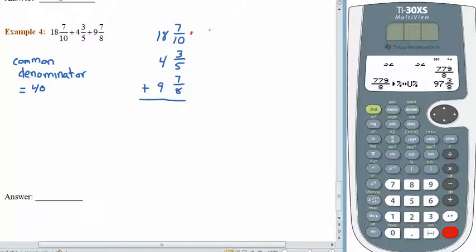So here we go. Let's change these. We would multiply 7 tenths by 4 over 4. Multiply 3 fifths by 8 over 8, to get that denominator of 40. And multiply 7 eighths times 5 over 5. So when we rewrite this, now we have 18. The whole number is not going to change. And 7 times 4 is 28. And those are 40ths. Your job is to convert the remaining two fractions, add, see what you get. Try this one on your own, and then come back in a few seconds, and we'll check it together.